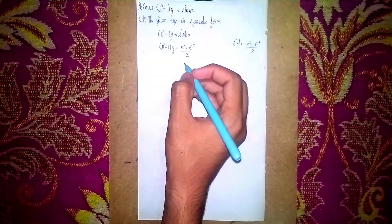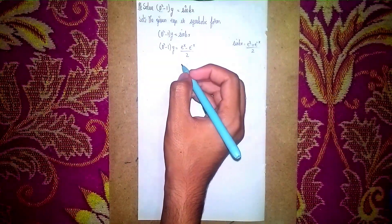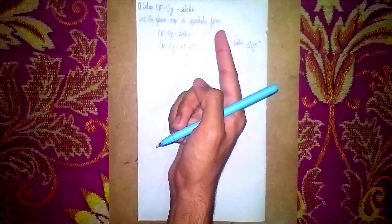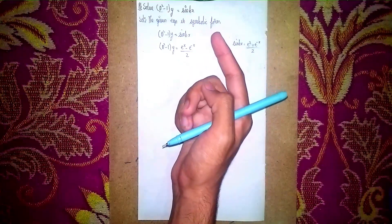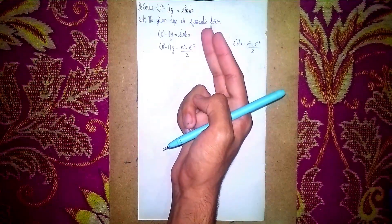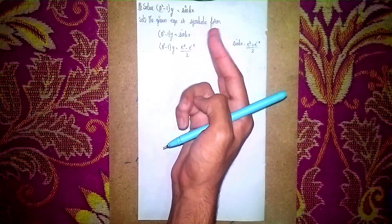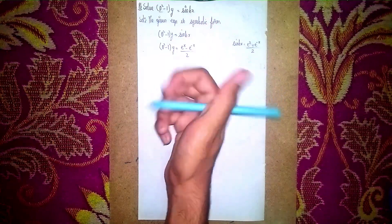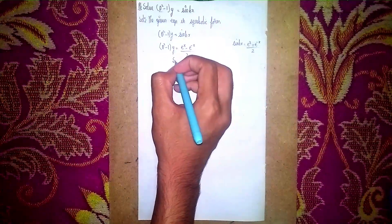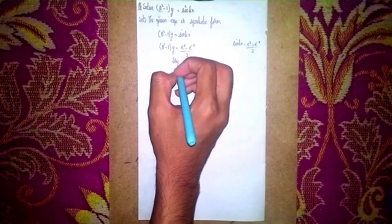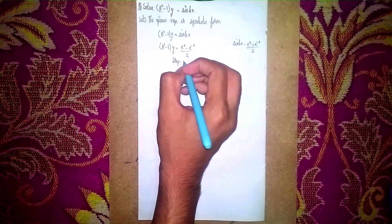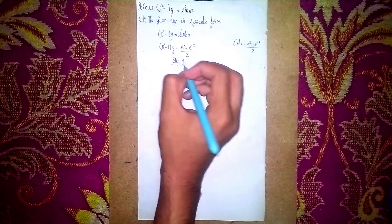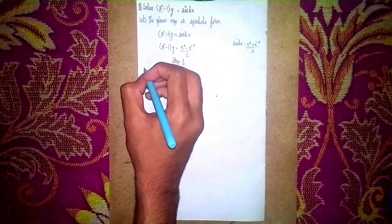Now there are three steps to solve this question. Step one is the complementary function, step two is to find the particular integral, and step three is to find the general solution.